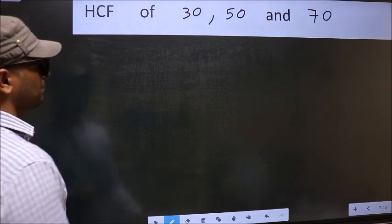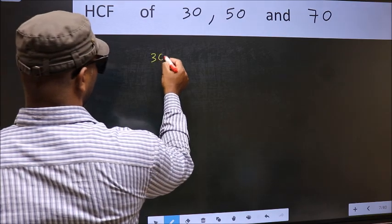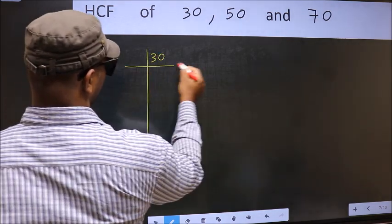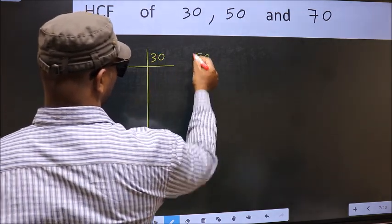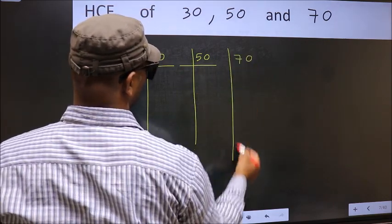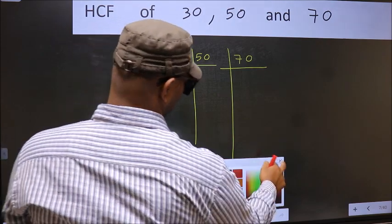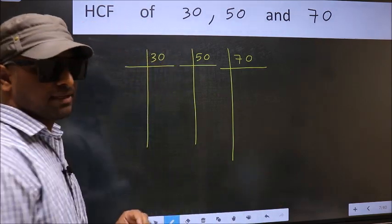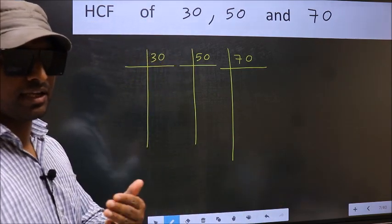What I mean is 30, 50, 70. This is your step 1. Next.